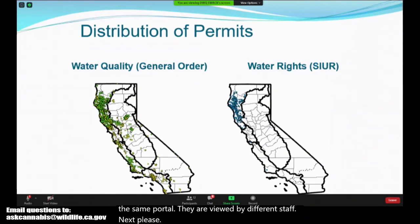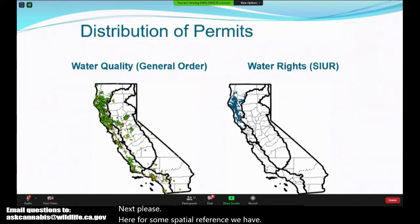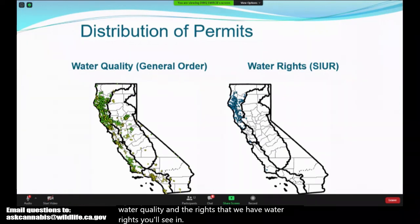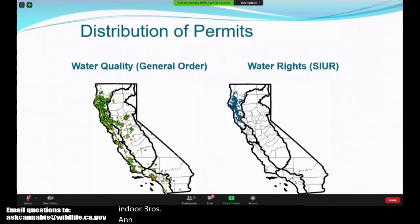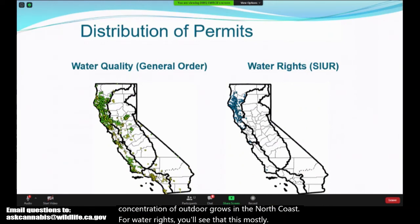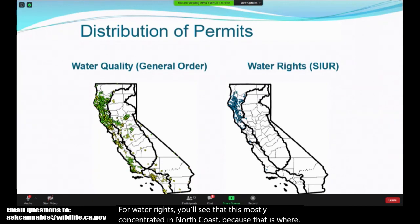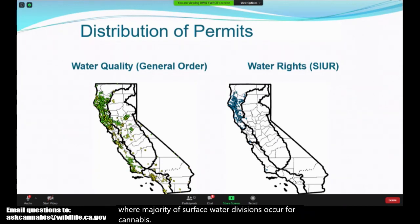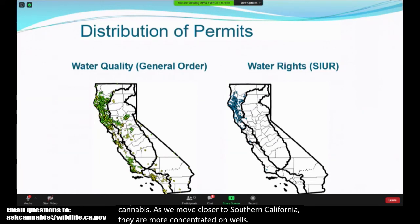Here, for some spatial reference, we have a distribution of our permits. On the left side we have water quality and on the right side water rights. In water quality, green dots are for outdoor grows while yellow are for indoor grows, distributed throughout the state with a concentration of outdoor grows in the North Coast. For water rights, it's mostly concentrated in the North Coast because that is where the majority of surface water diversions occur for cannabis. As we move closer to Southern California, they are more concentrated on wells.